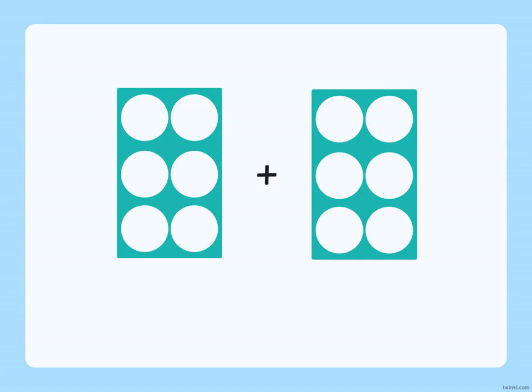Bigger numbers. What are we doubling this time? We're doubling six. Six and six. Did you count twelve? Well done.